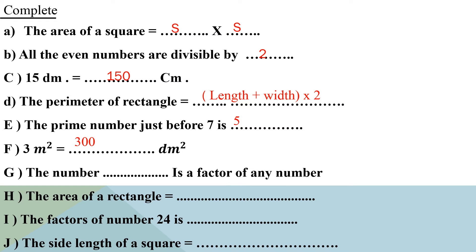Letter G: the number 1 is a factor of any number. The area of a rectangle equals length times width. Letter I: the factors of number 24 are — 1 × 24, 2 × 12, and 4 × 6. So the factors of 24 are: 1, 2, 4, 6, 12, and 24.